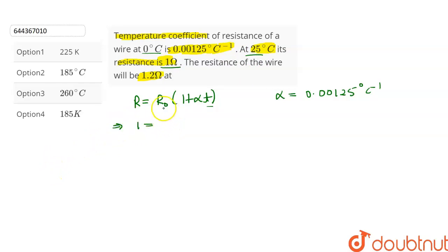the temperature is 25. Let this be the first equation. We have to find the temperature at which the resistance will be 1.2 ohms, so we can write 1.2 is equal to R0 into 1 plus 0.00125, and let that temperature be t dash. Let this be the second equation.